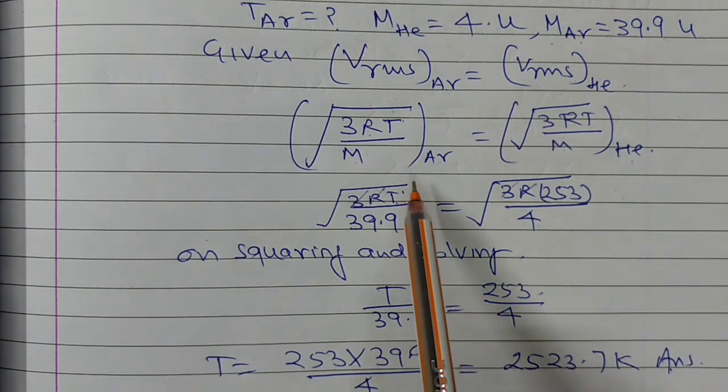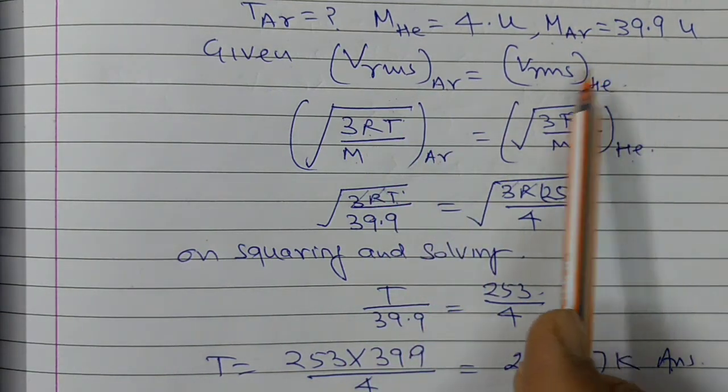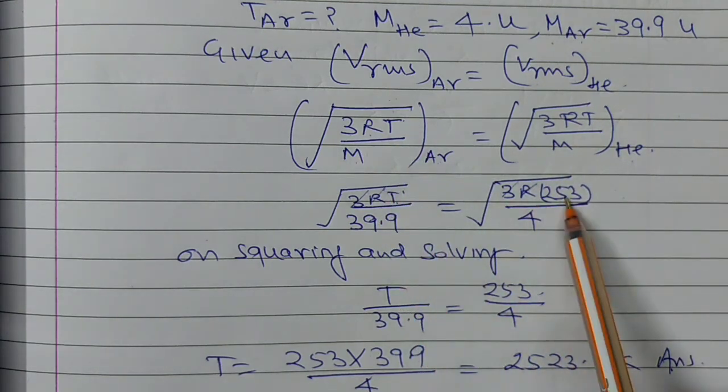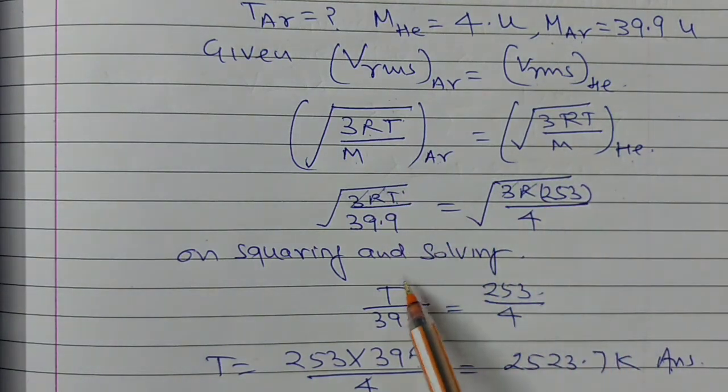So this is the answer. What did we do? We equated the RMS speeds of argon and helium, then put the given values. After solving, the temperature is 2523.7 Kelvin.